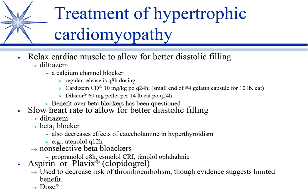Two others that we use diagnostically. Esmolol is interesting - it's an ultra short acting beta blocker. In human medicine they use it during surgery because they can titrate the beta blockade to effect; during valve replacements and similar procedures, they can titrate heart rate with esmolol - if it gets too low, decrease the CRI; too high, increase it. In veterinary medicine, we use it in animals with high heart rates where we're wondering if they'll benefit from a beta blocker - give a CRI of esmolol and see if it improves their hemodynamics. If it does, then switch them to atenolol.